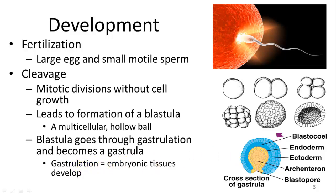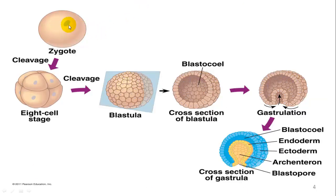The blastula then eventually becomes a gastrula, where part of the hollow ball invaginates. During gastrulation, embryonic tissues develop which eventually become the organs. The blastopore is the opening created by that invagination. The space inside the invagination is called the archenteron. You then have the endoderm and ectoderm forming, with the blastocoel — the space between them — filled with fluid.